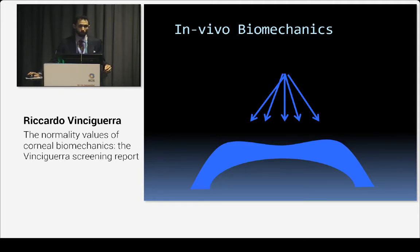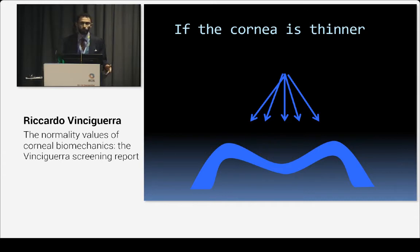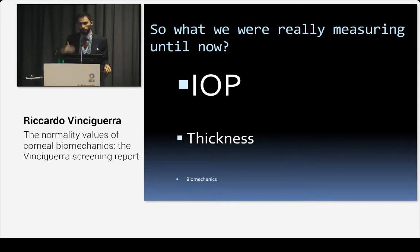As Cinzia told us, an eye with a lower IOP could act like a softer eye. The same thing applies if the cornea is thinner — the eye could be made of the same material but look softer. So what we are really measuring until now was, first of all, IOP, then corneal thickness along with the biomechanics, and at the end of the process we get biomechanics, because all these processes are connected to one another.